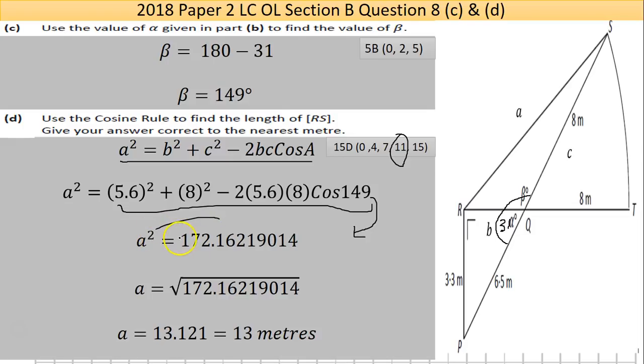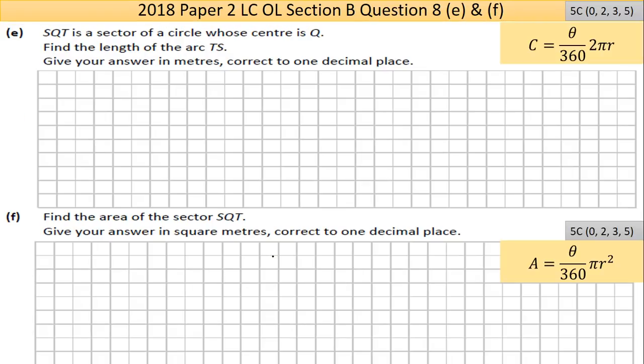We have that number, don't forget the a is a squared, so the square moves across the equal and square roots everything on the far side. Put that number to the calculator and I got 13.121, to the nearest meter is 13 meters. So that's question 8 part D.